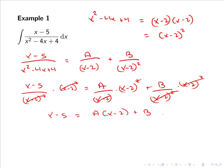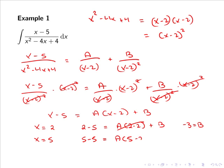If we pick x = 2, we get 2-5 = A(2-2) + B, so A cancels and we're left with -3 = B. Now that we have B, we can pick any value of x to find A. Picking x = 5, we get 0 = A(5-2) + (-3), which gives 0 = 3A - 3, so A = 1.